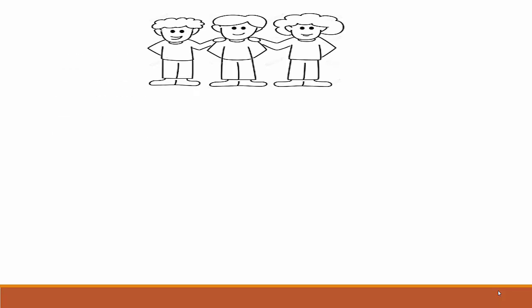Let us take an example. There are three friends. Each of them have chocolates with them. The first one has five chocolates, the second one has two chocolates, and the third one has two chocolates. Suppose if you want to distribute the chocolates among them equally, how can we do this?